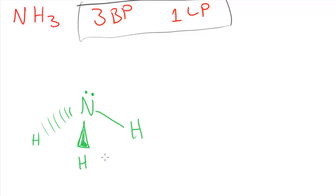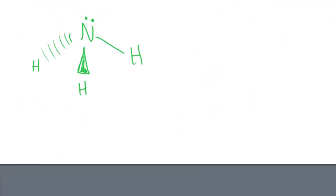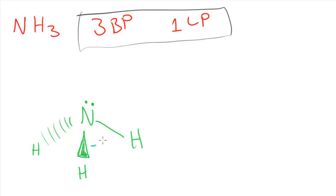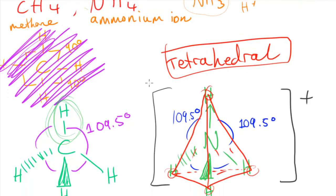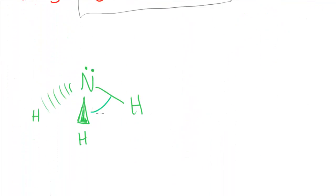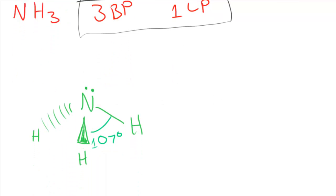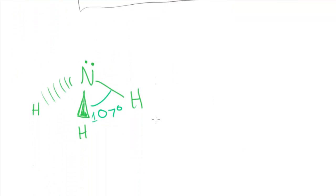The angle between the hydrogens is smaller than 109.5°. It's 109.5 minus 2.5, which gives us 107 degrees. That's how I remember the different angles — for 109.5° we subtract 2.5 to get 107°. And I'll show another bond angle in this video: 104.5°, which is just 107 minus 2.5.